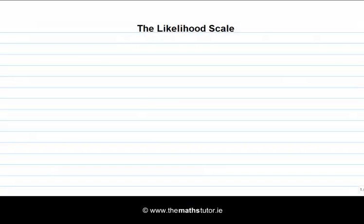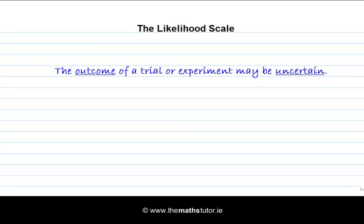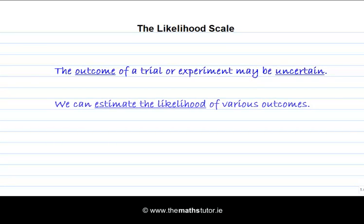Probability theory is the mathematical theory of likelihood. In real world situations, the outcomes of certain trials or experiments are often uncertain. For example, if you flip a coin, it's uncertain whether it will land heads or tails, or if two teams play a football match, the outcome is usually uncertain. In situations like this, we often want to estimate the likelihood of various different outcomes, and probability theory is the mathematical theory that allows us to do that.